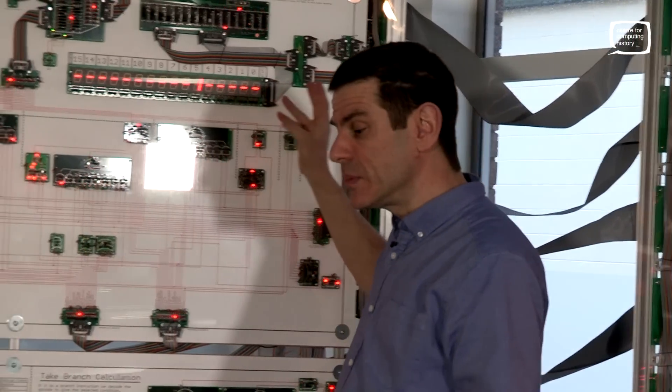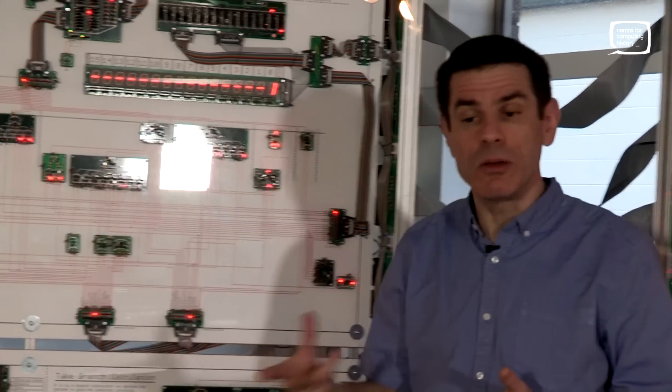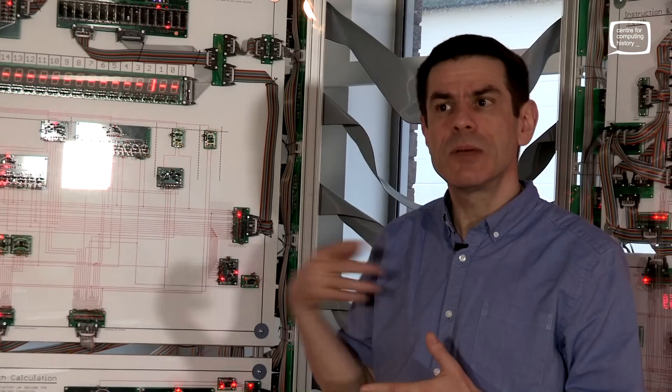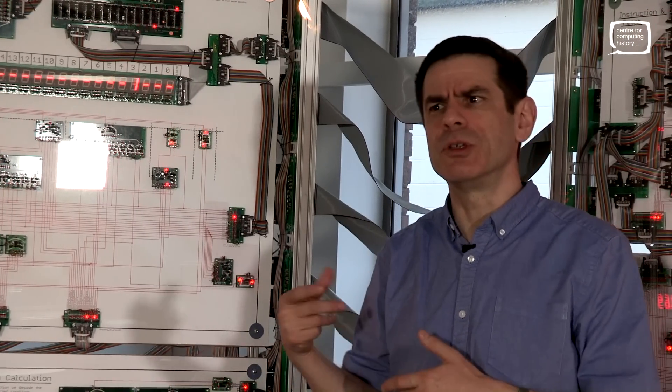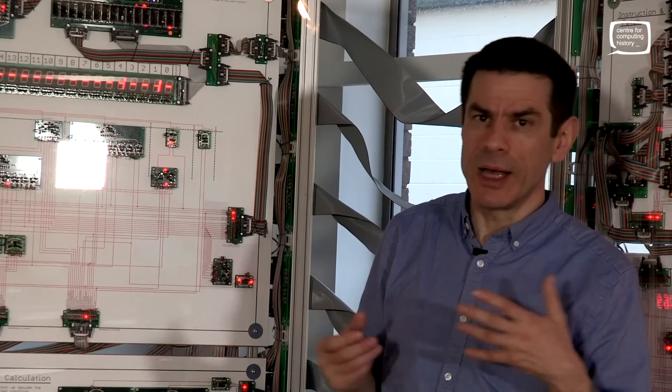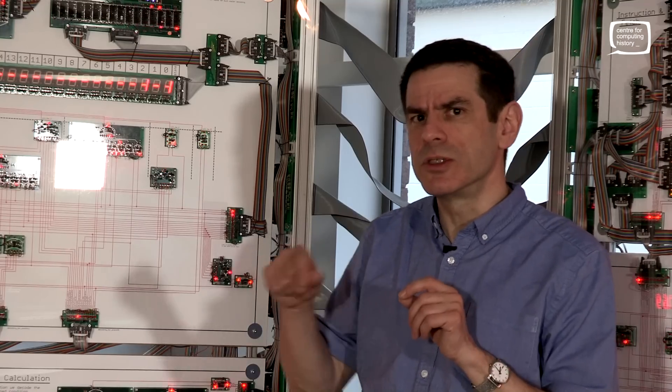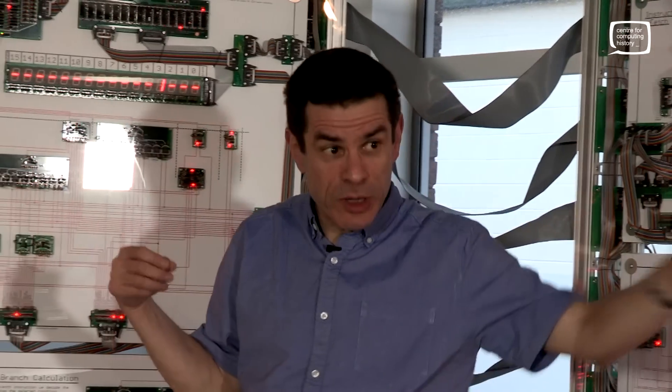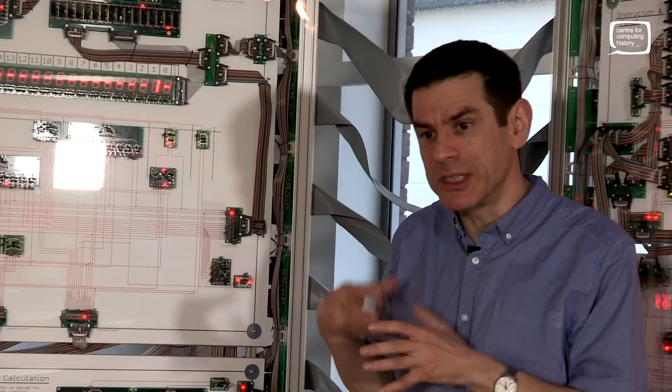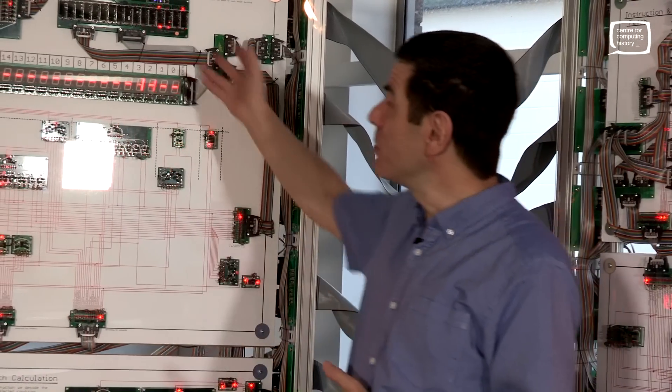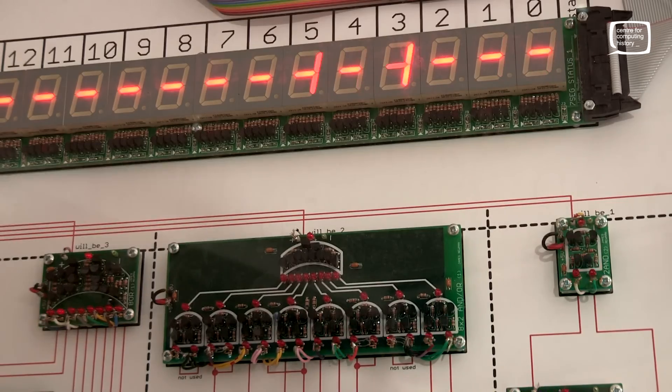So as I said, some instructions are simple and take a single clock cycle to execute. Some instructions are more complicated, like if you want to load something from memory or do something like that, then it takes a sequence of operations within the processor to carry out a single instruction. And it's the state machine which controls that process.